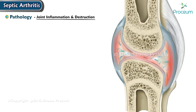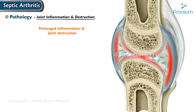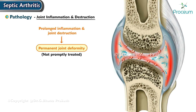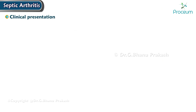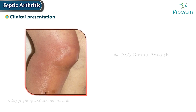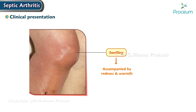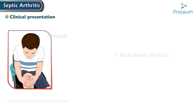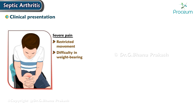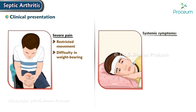Prolonged inflammation and joint destruction can result in permanent joint deformity if not promptly treated. In clinical presentation, the affected joint shows visible swelling often accompanied by redness and warmth. Severe joint pain leads to restricted movement and difficulty in weight bearing.